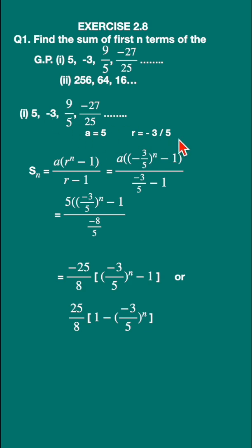The formula for the sum of the first n terms, that is called the geometric series, is S_n equals a into r raised to n minus 1, upon r minus 1.